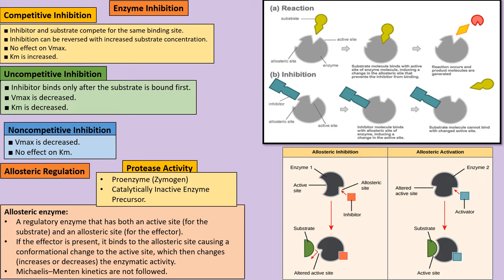Feedback regulation works as follows: substrate A produces B via enzyme 1, B produces C via enzyme 2, and C produces D via enzyme 3. The end product D controls enzyme 1, either activating or inhibiting it. In the body, we normally have negative feedback regulation, where the end product inhibits the first enzyme to prevent overproduction.